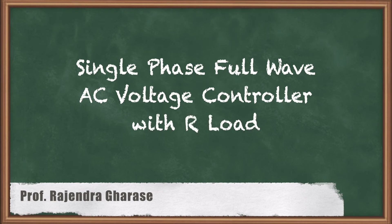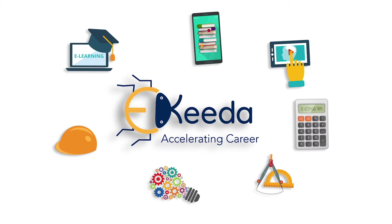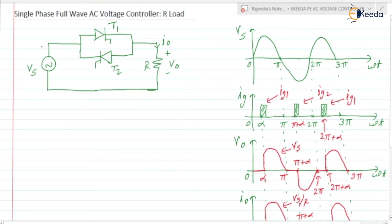Hello friends. In this video, we are going to discuss about single-phase full-wave AC voltage controller with purely resistive load. Here we are having the circuitry for full-wave AC voltage controller. It consists of the supply Vs which is equal to Vm sin(ωt). We are using two thyristors T1 and T2, these two are connected in anti-parallel. The load is purely resistive, voltage across load is V0, current flowing through the load is I0.